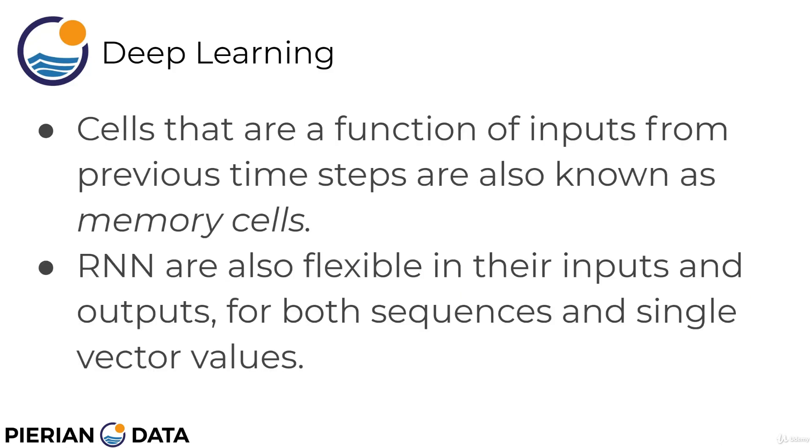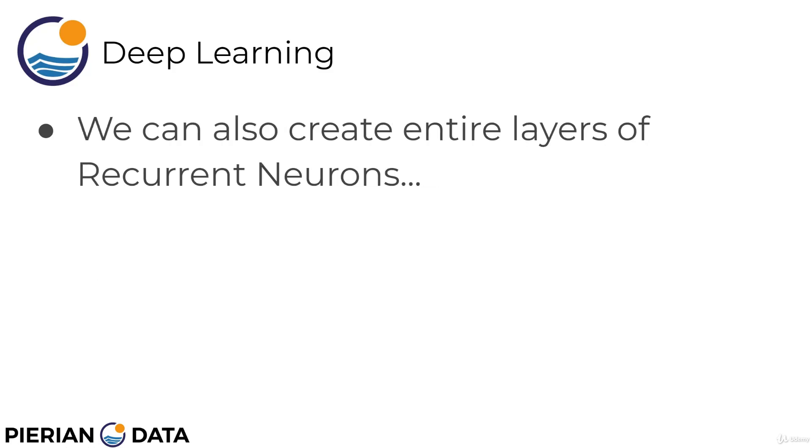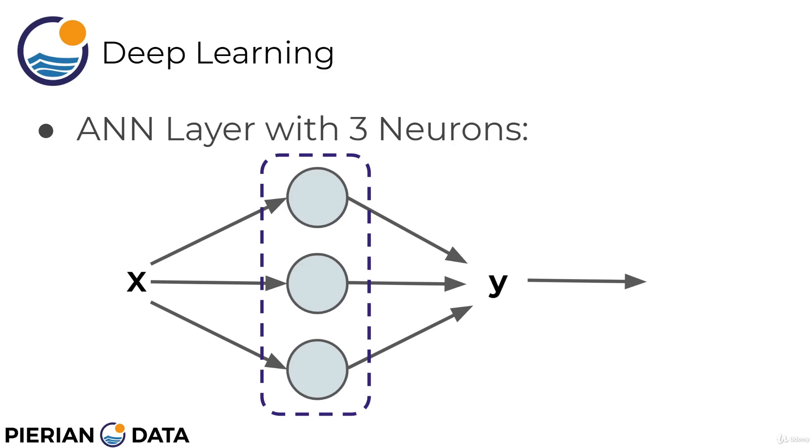Cells that are a function of inputs from previous time steps are also known as memory cells. And recurrent neural networks are also flexible in their inputs and outputs for both sequences and single vector values. So, we can create entire layers of recurrent neurons. We already know what an artificial neural network looks like, and here we have just a normal ANN layer with three neurons. We're passing in some set of features x into these neurons, and then we get some output y. So, recurrent neurons, we just saw a single neuron, but keep in mind, we can apply the same principle to a recurrent neural network layer with three neurons, essentially taking that same output and passing it along as an input to each of these neurons.